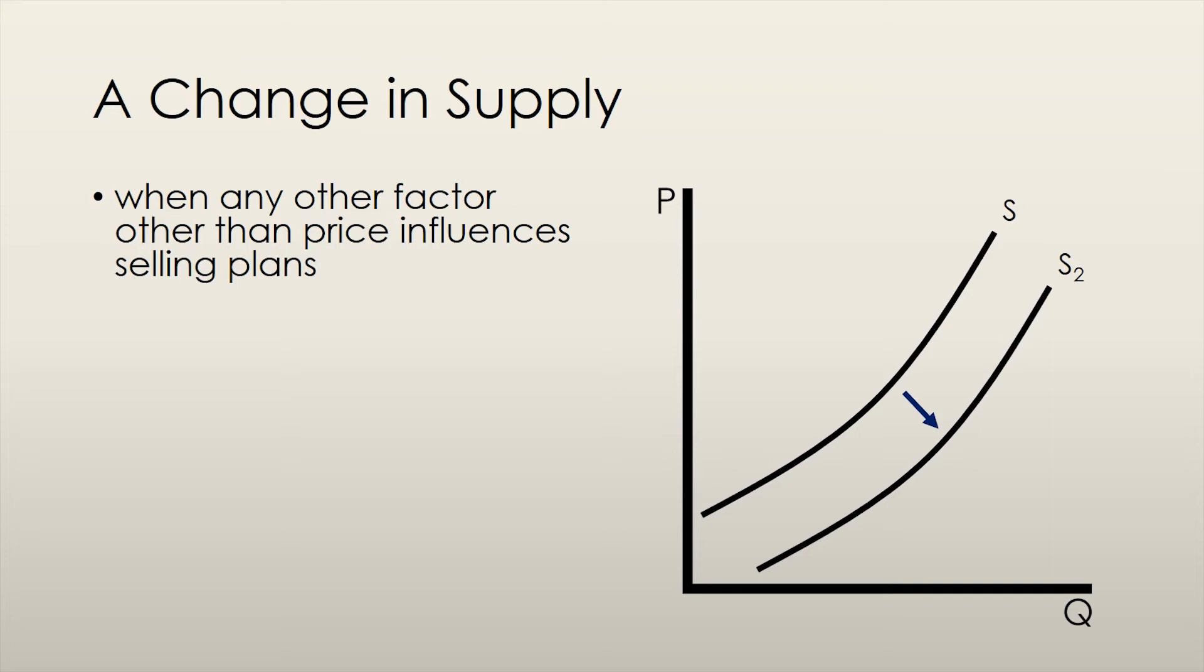Note that when we say that supply has increased, we shift the curve down and to the right, and when we say that supply has decreased, we shift the curve up and to the left.